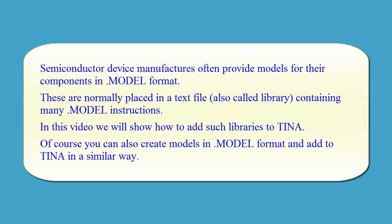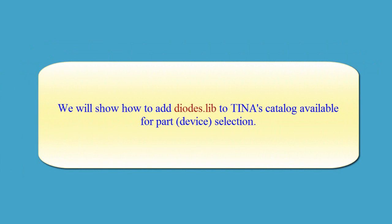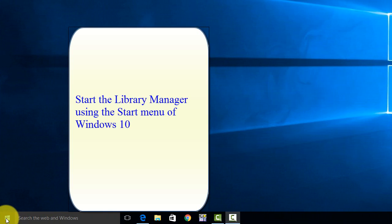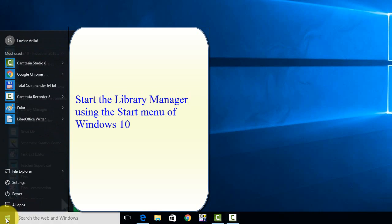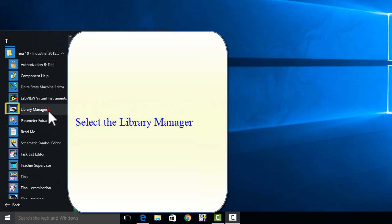You can also create models in DOT Model format and add them to TINA in a similar way. In TINA, there are two sample libraries called Diodes.lib and Transistors.lib. We will show how to add Diodes.lib to TINA's catalog available for part selection. Start the Library Manager using the Start menu of Windows 10. Click the TINA Program folder and select the Library Manager.